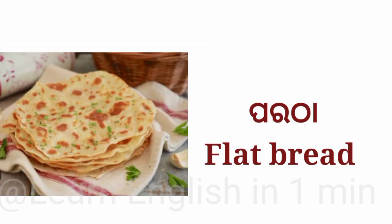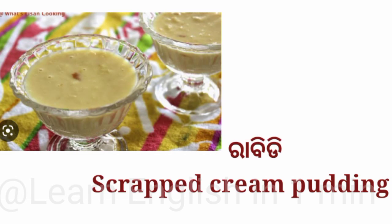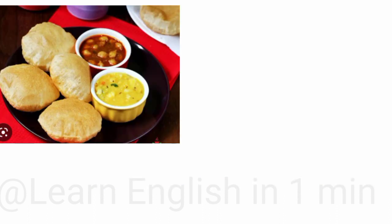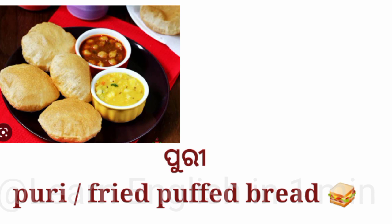Paratha — what is the English translation? Paratha means flat bread. Rabbi — what is the English translation? Rabbi means scraped cream pudding. Poori — what is the English translation? Poori means fried puffed bread.